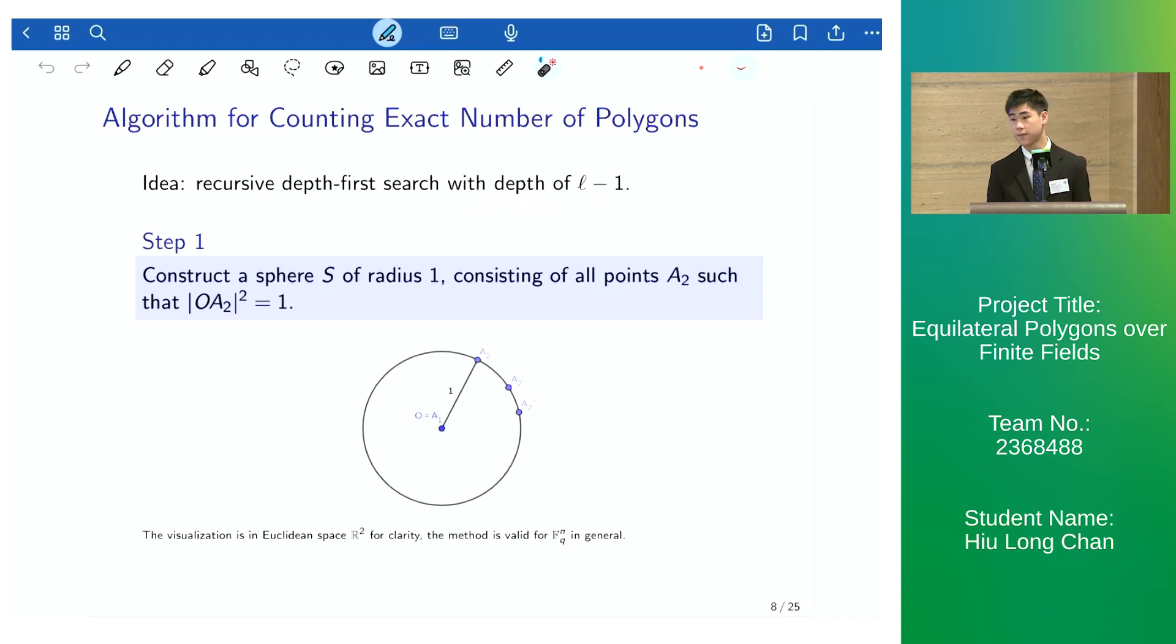In the first step, we construct a sphere with radius 1 consisting of all points A_2 such that the square distance is equal to 1.